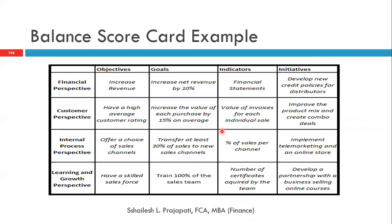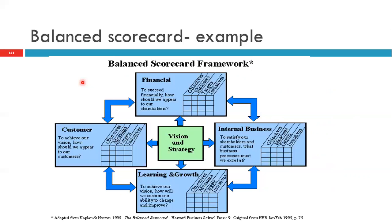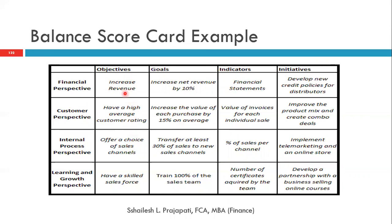Here is an example from a small MSME company showing how to look at the Balanced Scorecard across the four perspectives. For the financial perspective: objective — increase revenue; goal — increase net revenue by 10%; indicator — financial statement reviewed every month, week, or quarter; initiative — develop a new credit policy for customers. For the customer perspective: objective — have a high average customer rating; goal — increase the value of each purchase by 15% on average; indicator — value of invoices for each individual sale; initiative — improve the product mix and create commodities. Similarly, you can look at the internal process and learning and growth perspectives in the same way.